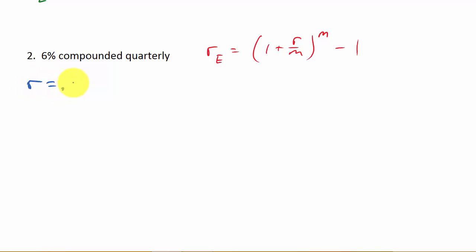R is equal to 0.06, the 6%. Write it as a decimal. M, it's compounded quarterly, so M is 4. Now let's just plug everything in. R sub E is equal to 1 plus 0.06 over 4 raised to the 4th minus 1.